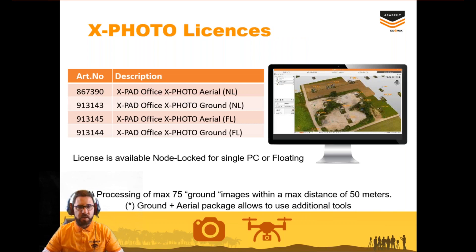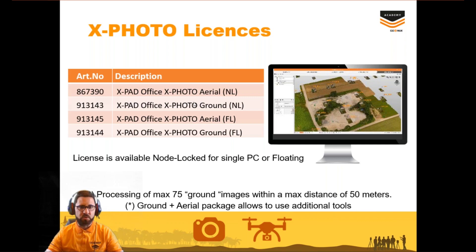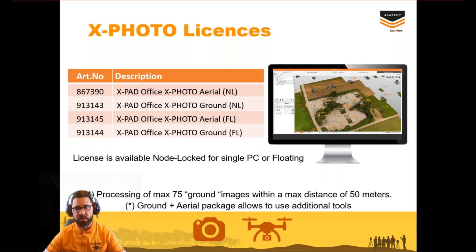Regarding the XPhoto license, we have two types: node-locked for a single PC or floating, usable on multiple PCs with multi-seat. We divide licenses into Ground Basic and Aerial Pro. With Ground Basic we can process a maximum of 75 ground or aerial images with a maximum distance of 50 meters. With Aerial Pro we have both modules combined, processing all images without limitation, plus additional functionality compared to Ground Basic.